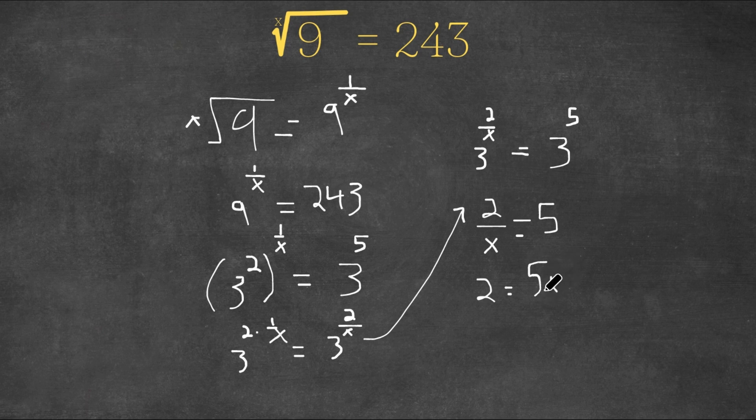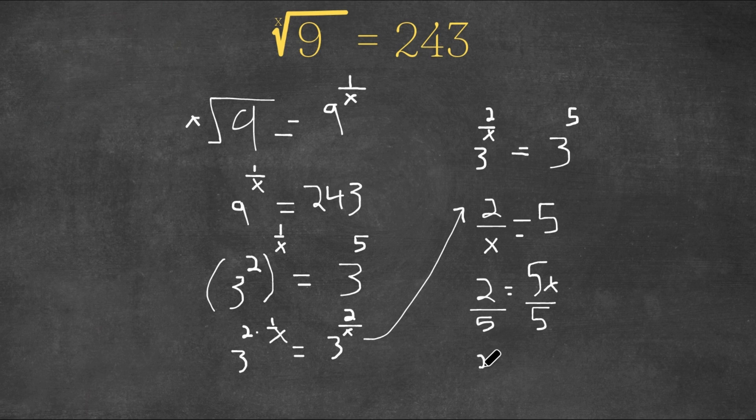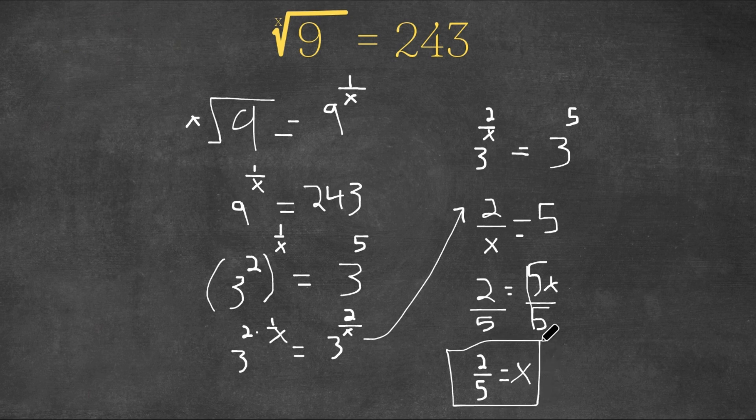And now we want to isolate x, so we're going to divide by 5 on both sides. So now we get 2 over 5 equals, these two cancel out, simply x. So x is equal to 2 over 5. And that is our answer.